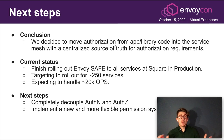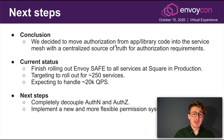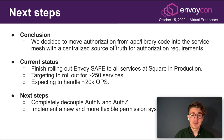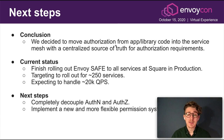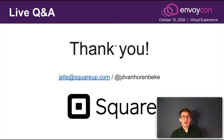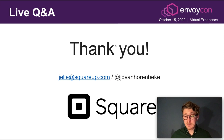In conclusion, we decided to move all our authorization from app and library code into the service mesh with a centralized source of truth. Currently, we're rolling this out in production, targeting close to 250 services and expecting to handle around 20k QPS. Our next steps will focus on decoupling our authentication and authorization strategies, which will allow us to implement a new and more flexible permission system with even more features from an application standpoint. Thanks everyone for listening — here's my email if you want to reach out, and if you're interested in working on these problems, Square is hiring.